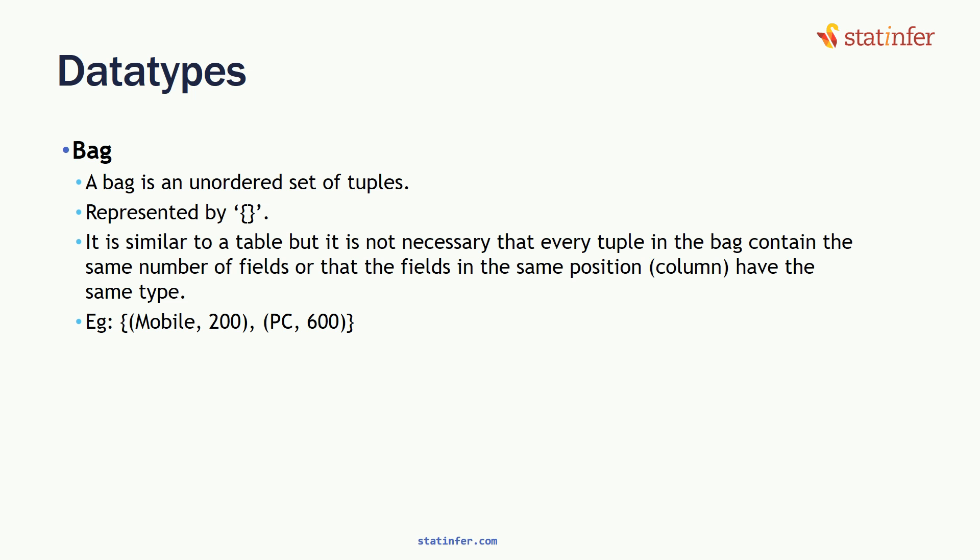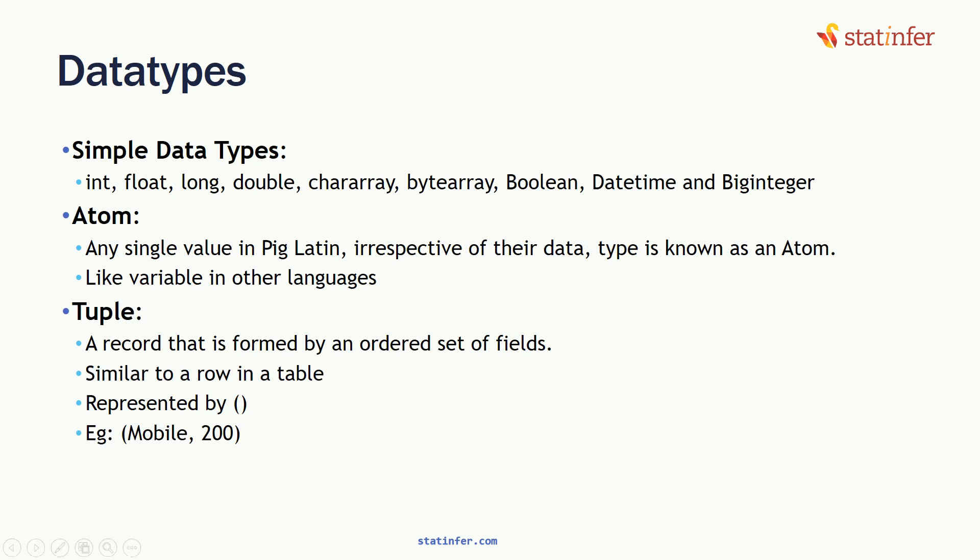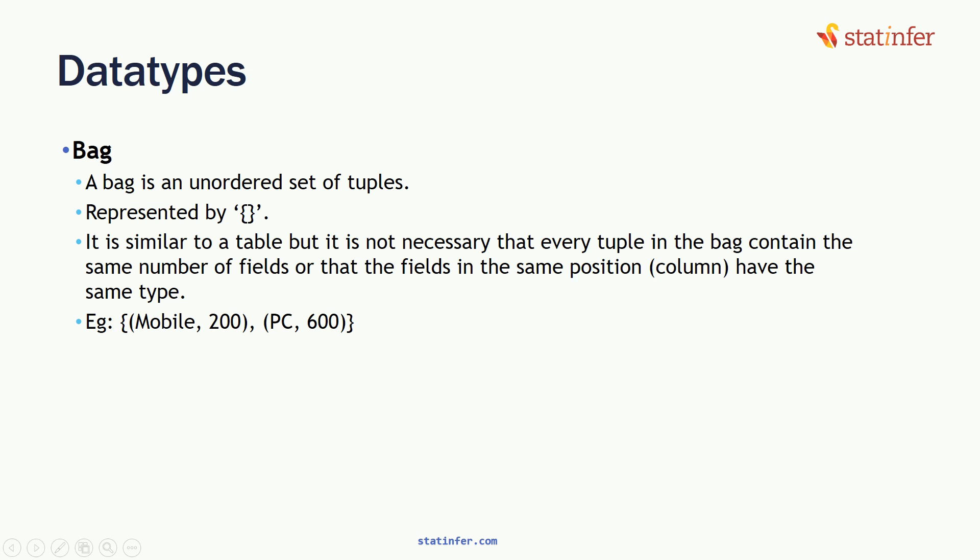A bag is an unordered set of tuples. A tuple is, for example, (mobile, 200), where the first column is item name and the second is item cost. In a bag, fields at the same position need not be the same — the first row can have 20 columns, the second 25 columns, the third just four columns. A bag is simply a collection of tuples. So (mobile, 200) and (pc, 600) together form a bag.